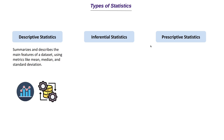First, let's understand descriptive statistics. Descriptive statistics is all about summarizing and describing the main features of a dataset using metrics like mean, median, and standard deviation. What we are going to do with a descriptive statistical approach is just understand the data — we are not going to come to any conclusion. We are just going to describe and define how the dataset looks by summarizing it.